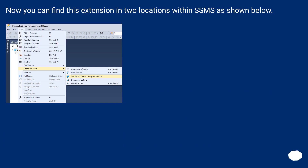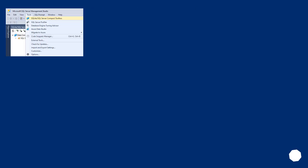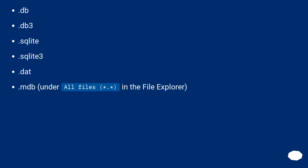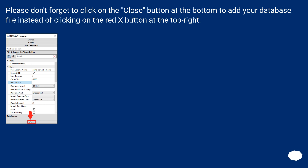Now you can find this extension in two locations within SSMS, as shown below. To complete this, you'll want to add the SQLite connection. Go find your SQLite database file under these formats: db, db3, sqlite, sqlite3, dat, mdb — or select 'All Files' in the file explorer. Please don't forget to click on the Close button at the bottom to add your database file, instead of clicking the red X button at the top right.